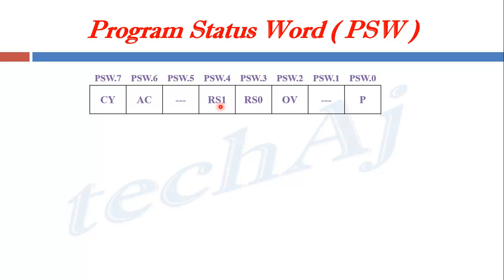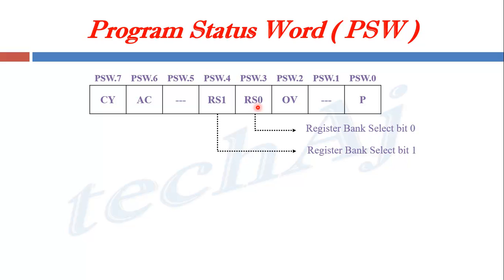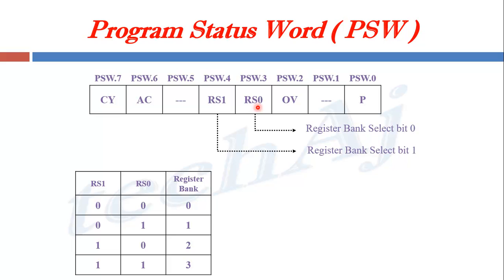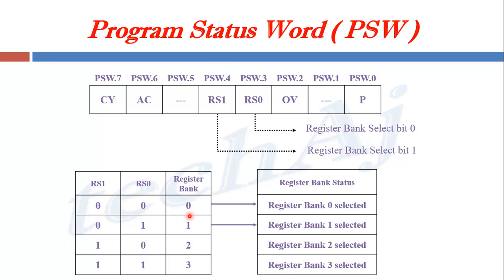Next, we will see RS1 and RS0, which are the register bank select bits. RS0 is bank select bit 0, and RS1 is bank select bit 1. By setting the values of these two bits, we can select one of the register banks from RAM memory. The possible values are: RS1=0, RS0=0 selects register bank 0; RS1=0, RS0=1 selects register bank 1; RS1=1, RS0=0 selects register bank 2; and RS1=1, RS0=1 selects register bank 3. This concludes the program status word of the 8051 microcontroller.